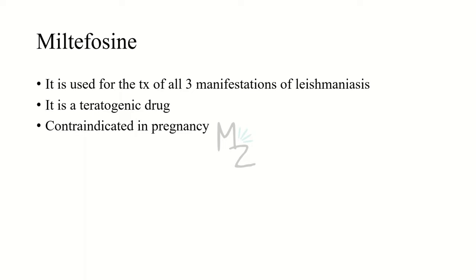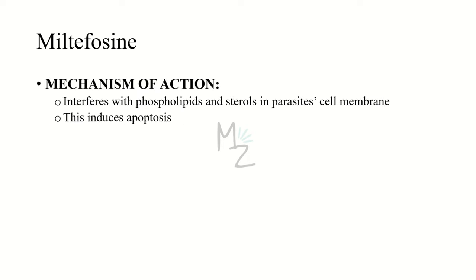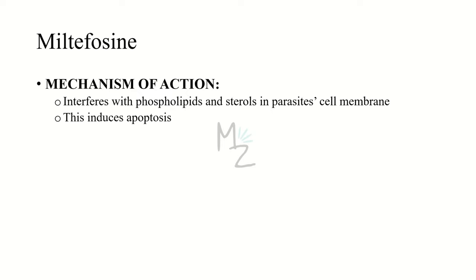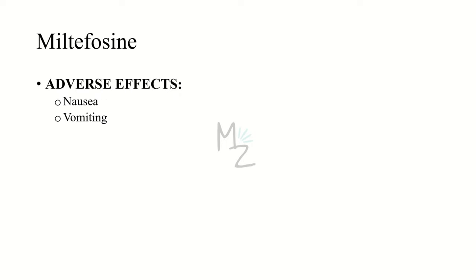Miltefosine is the first orally active drug for visceral leishmaniasis and can also treat cutaneous and mucocutaneous leishmaniasis — all three manifestations. It is a teratogenic drug and should be avoided in pregnancy. Mechanism of action: miltefosine appears to interfere with phospholipids and sterols in the parasitic cell membrane to induce apoptosis. Adverse effects include nausea and vomiting.